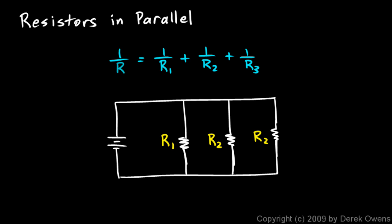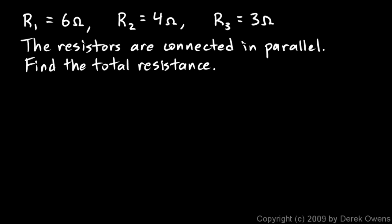The essential aspect is still present here and that is that the current that comes out of the battery divides into multiple branches. Some of the current goes through R1, some goes through R2, and some goes through R3, so those are in parallel. Now we're going to work an example problem.